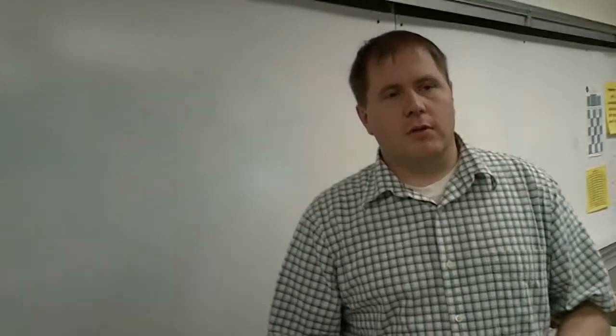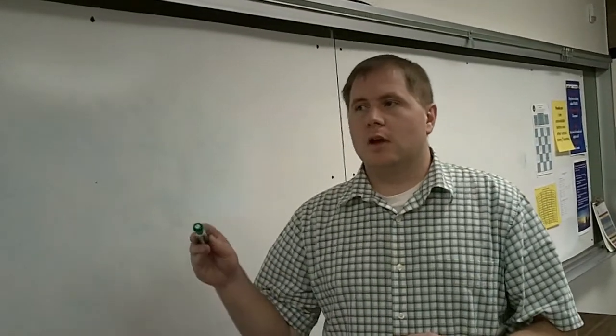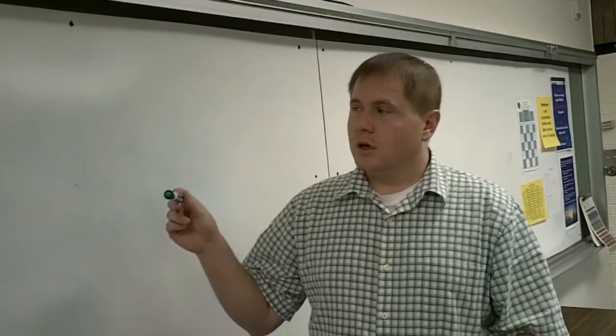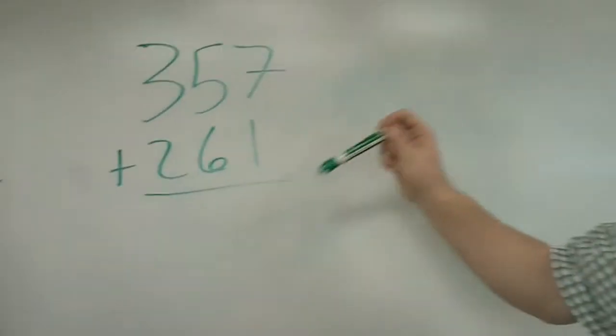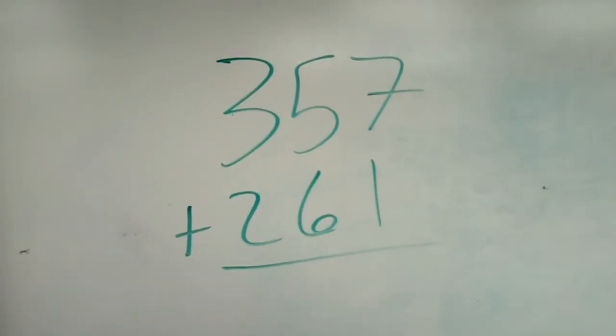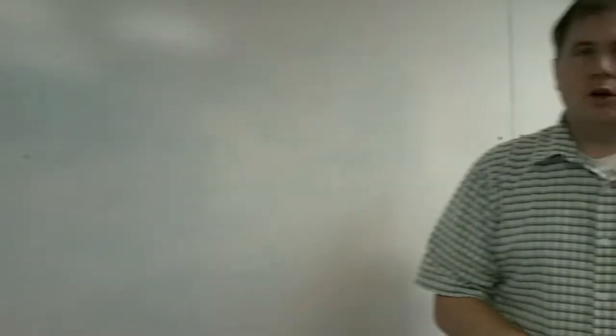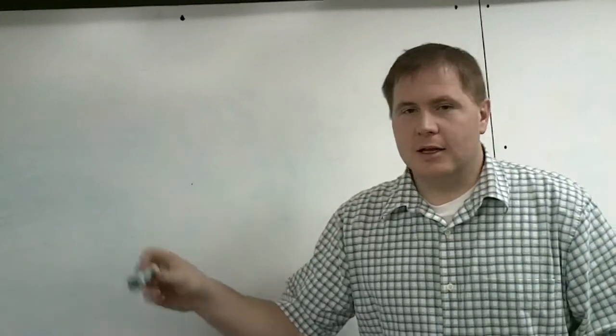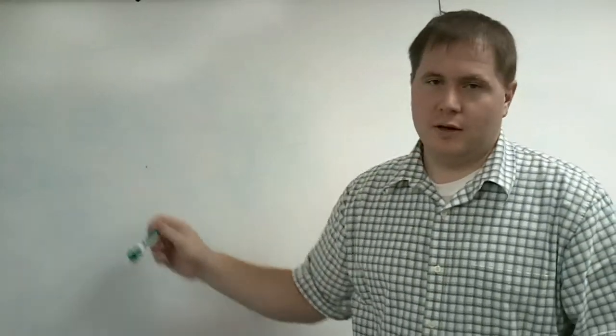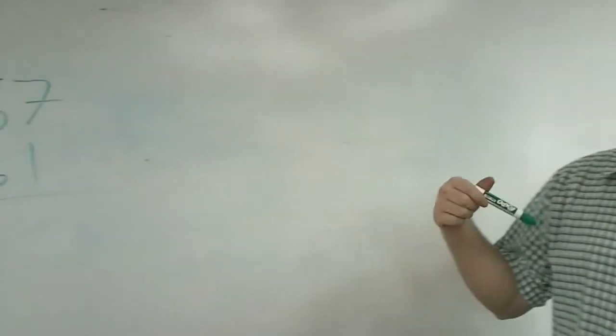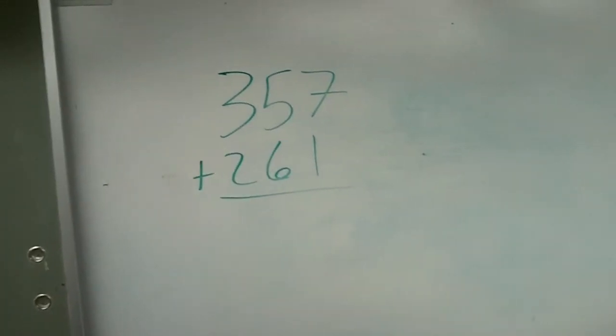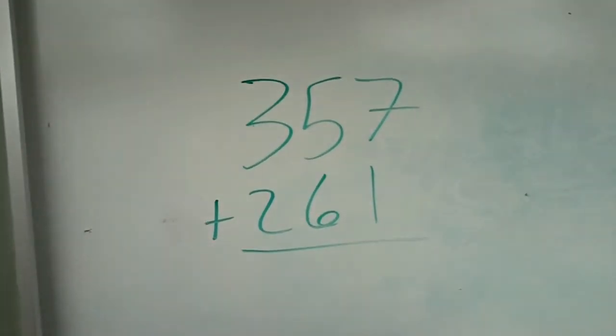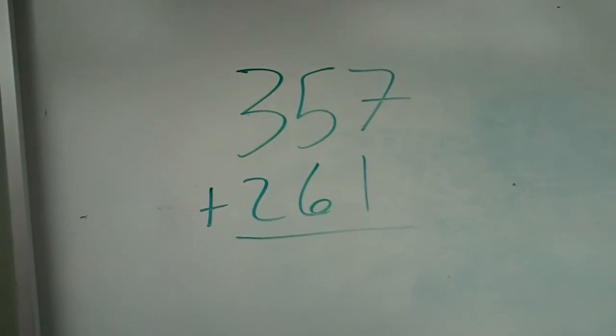Okay, so we're going to continue where we were talking last time about being able to add these when it requires some carrying or regrouping. Last time we looked at it when we had to regroup into the tens column. We're going to look at it today when we have to regroup into the hundreds. It's going to be the same idea but just making a little point here to hopefully make the connections of what's happening as we add more different place values.